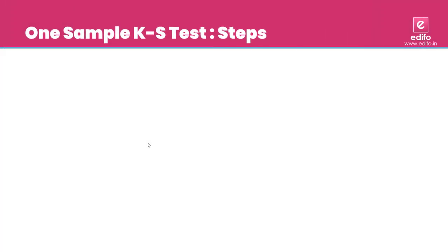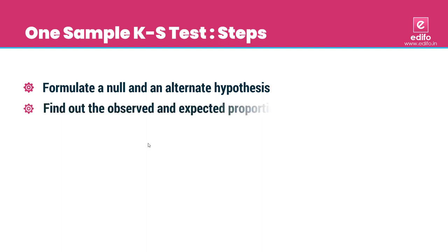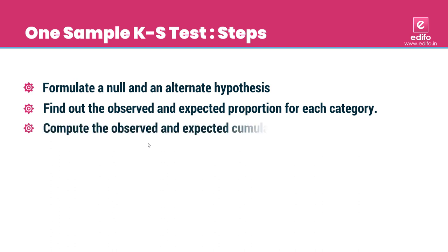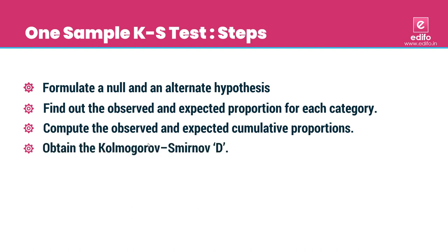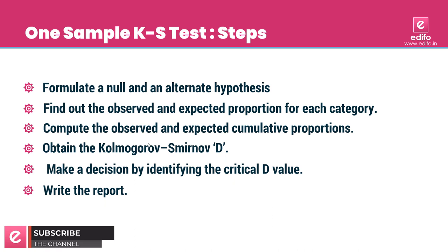Here are the six steps to conduct the KS test. Step 1: Formulate a null and alternative hypothesis. Step 2: Find out the observed and expected proportion of each category. Step 3: Compute the observed and expected cumulative proportions. Step 4: Obtain the Kolmogorov-Smirnov D value using the formula. Step 5: Make the decision by identifying the D critical value (D alpha). Step 6: Write the report.